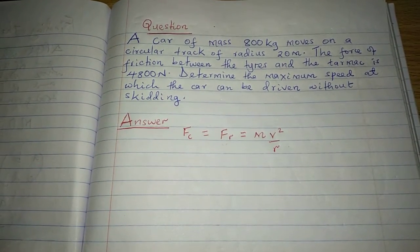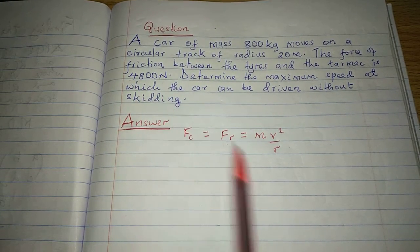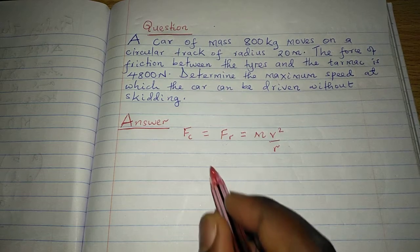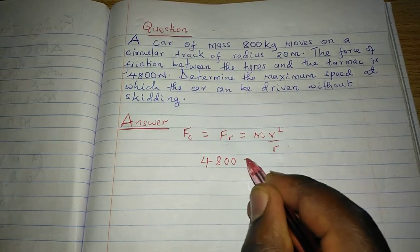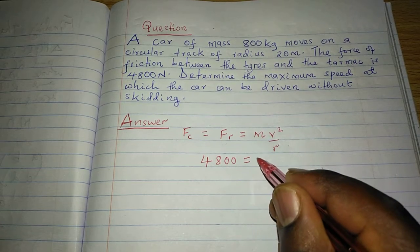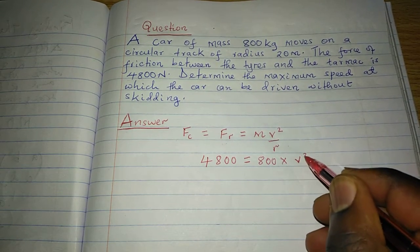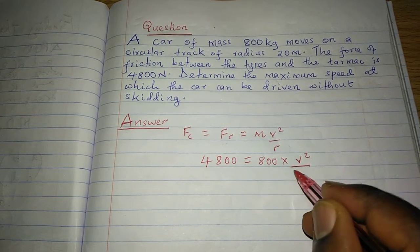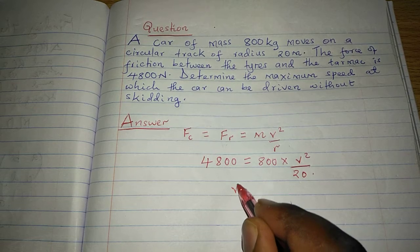Now that we're given the friction between the tarmac and the tires, then we can equate that friction with mass which is 800 times V squared, which is unknown, divided by radius of 20. So we can remain with V squared.